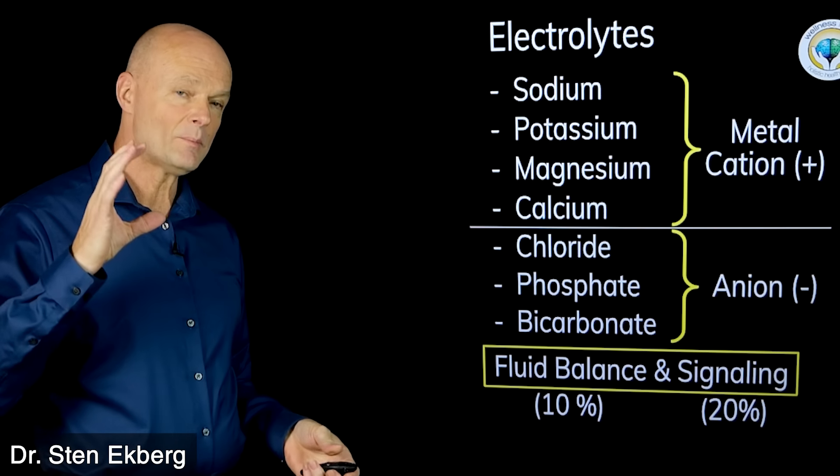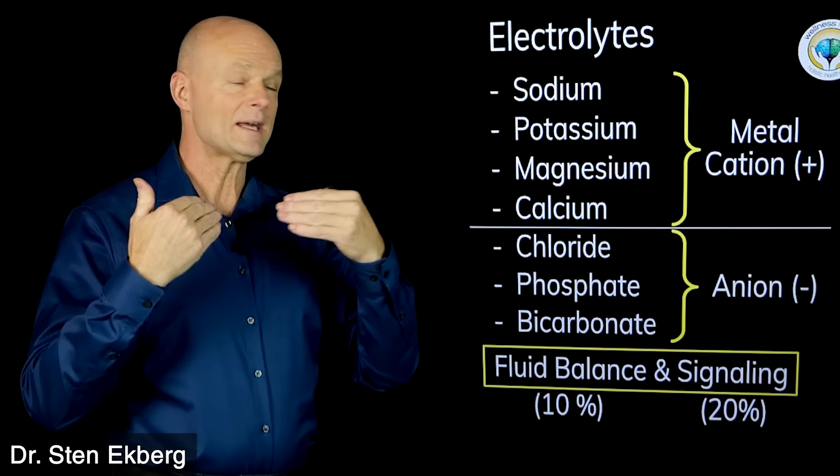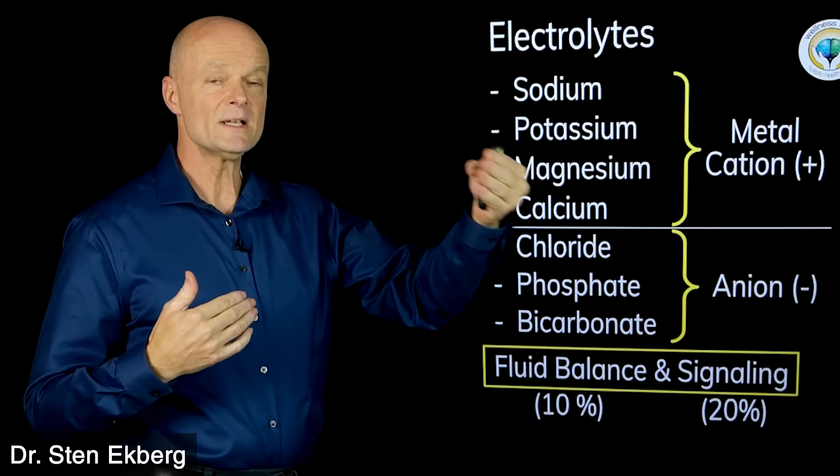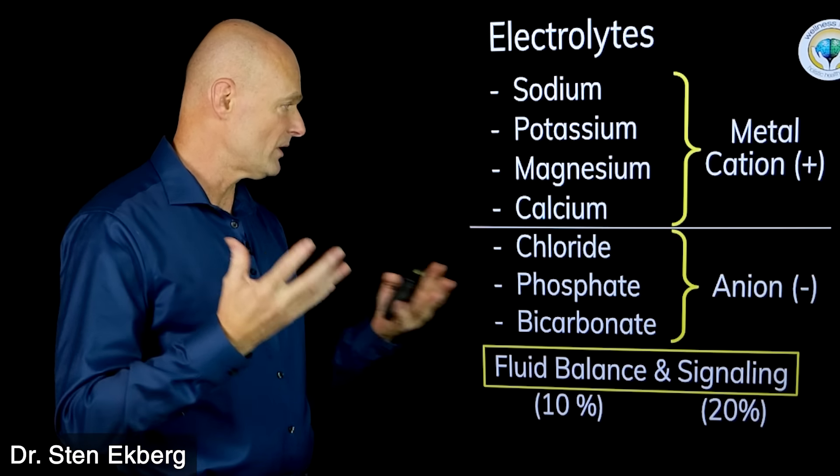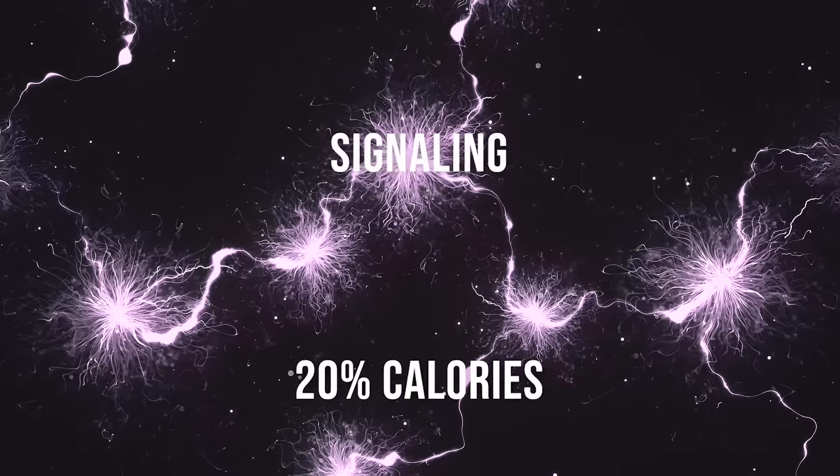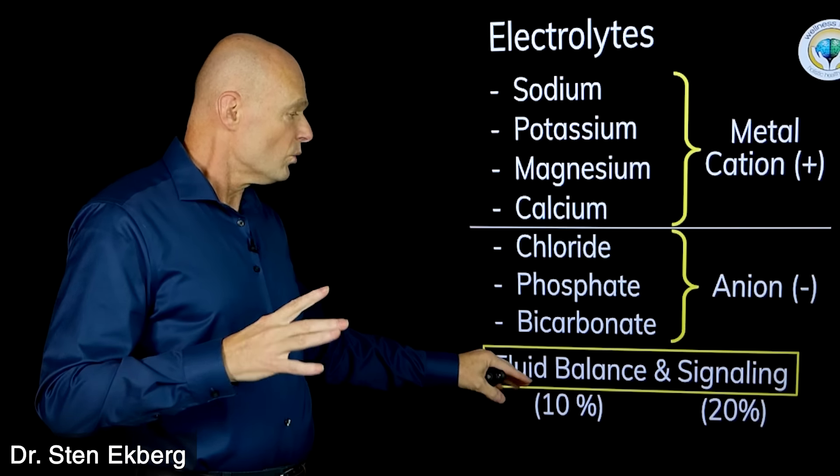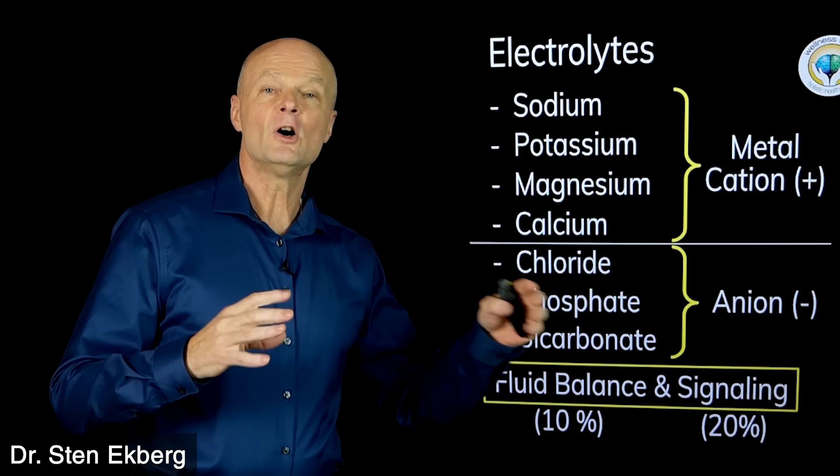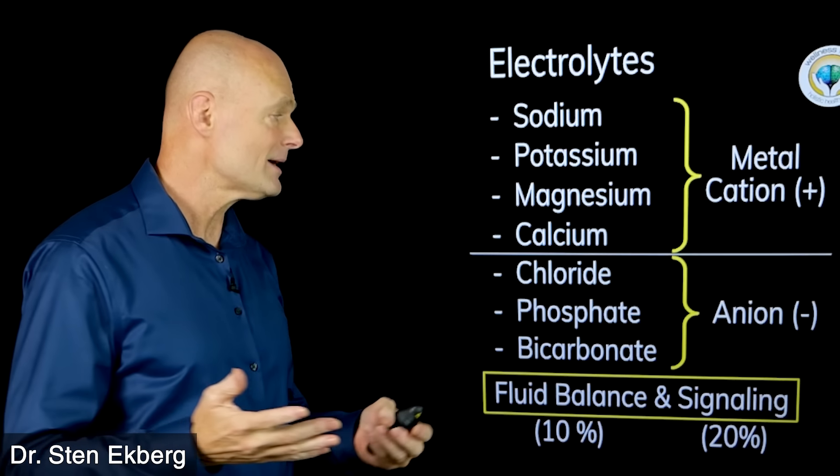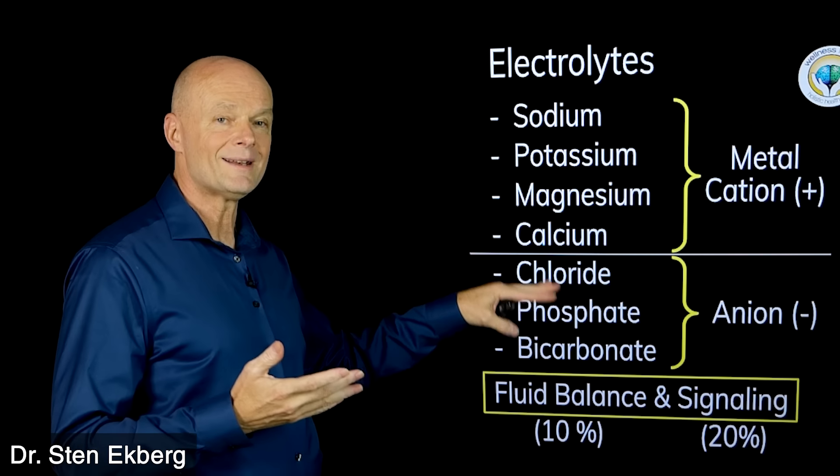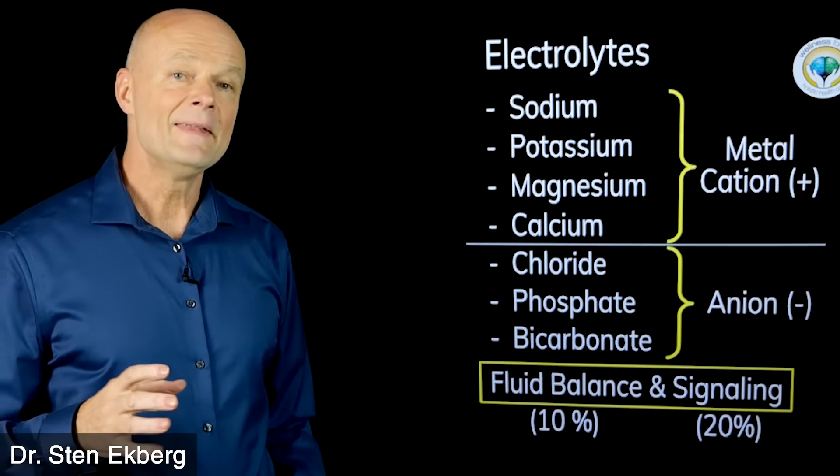The body keeps some, it gets rid of some, and that's how it regulates fluid. That alone takes 10 percent of your total basal metabolic rate. And then of course signaling, which is the brain and nervous system—sodium and potassium flowing across membranes creates signals. That's usually 20 percent or more of all your calories. So already here we are accounting for about a third of all your calorie expenditure. I would say that's pretty important.